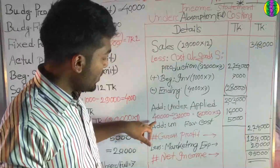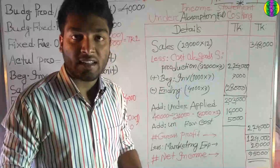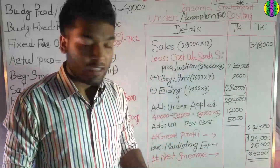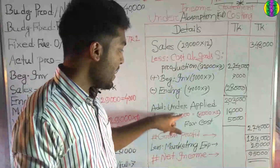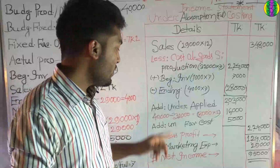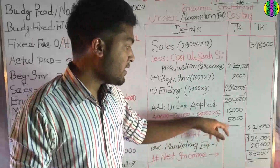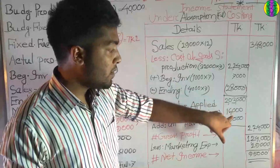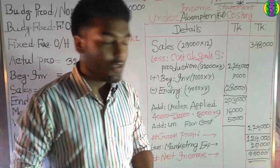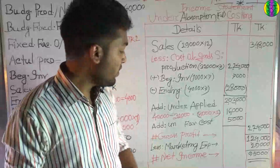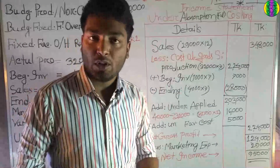Looking at the actual production of 8,000 units, we calculate the under-applied fixed factory overhead rate. With actual production of 8,000 units, there is an under-applied overhead. The annual cost is approximately $5,000. The current cost of sales is $2 by $4,000. There is a gross profit figure, and it is negative, meaning we have a loss under absorption costing in this scenario.